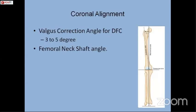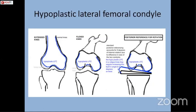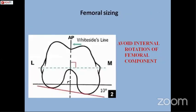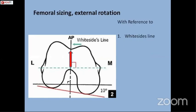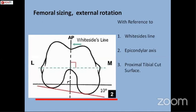For bony correction, the coronal alignment should be perfect. The valgus correction angle in these cases is generally taken as 3 to 5 degrees, but this depends upon the femoral mechanical-shaft angle. The major culprit is the hypoplastic lateral femoral condyle. While doing femoral sizing, there is a tendency of putting the femoral component in excess rotation, which can lead to femoral problems. So other references are taken into consideration: the whiteside line, the trans-epicondylar axis, and the proximal cut surface of the tibia. If we take all three into consideration, the margin of error in femoral rotation is less and complications are fewer.